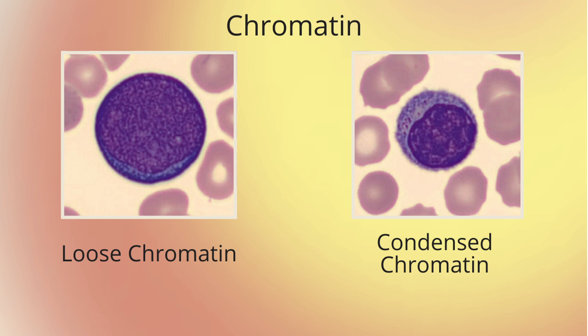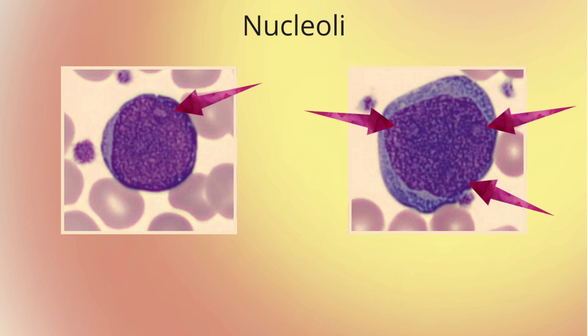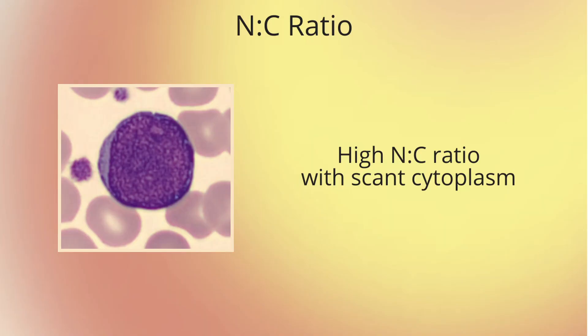Blast cells have a very loose chromatin pattern. Compare it to a cell that you definitively know is mature to gauge how loose the chromatin is as a guide. The nucleus will have nucleoli, usually one, but in some situations many. The nucleus to cytoplasm ratio, or NC ratio, will be very high, meaning the cell is made up of mostly nucleus with small to scant cytoplasm showing, usually.